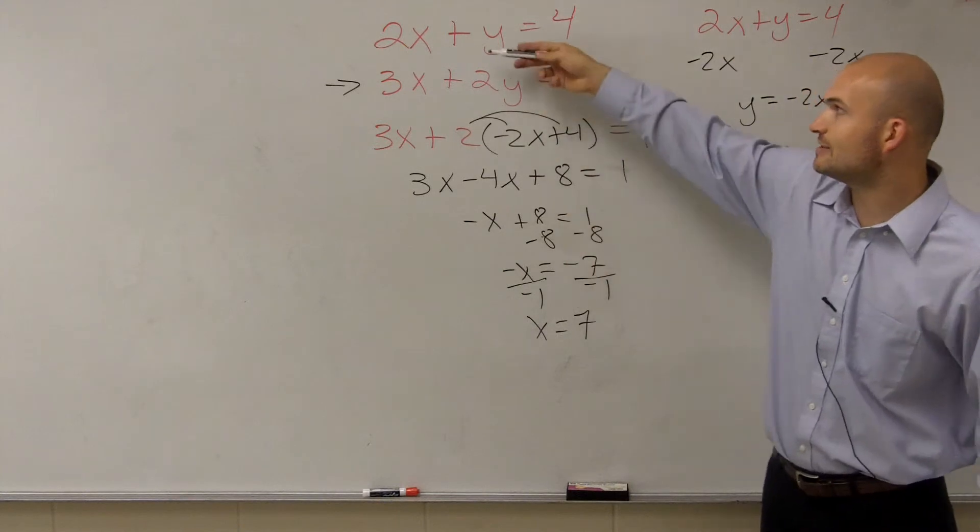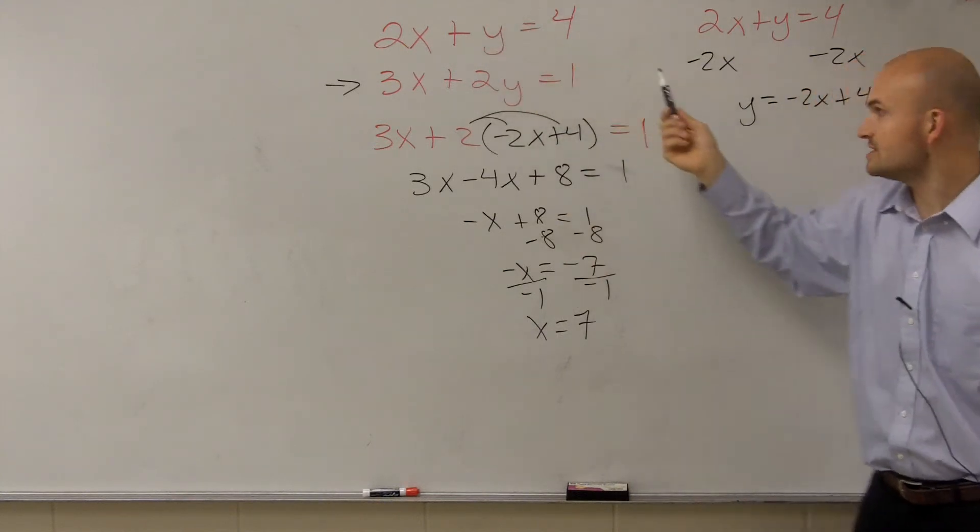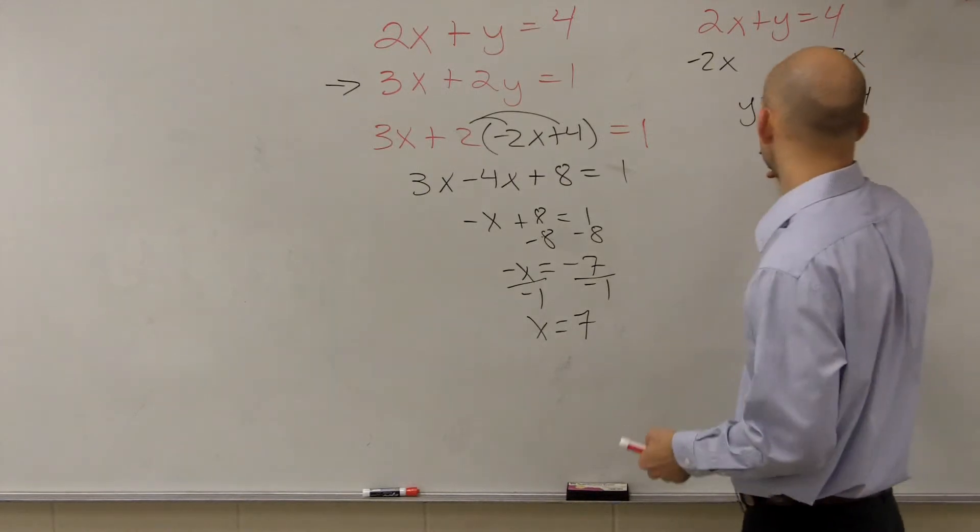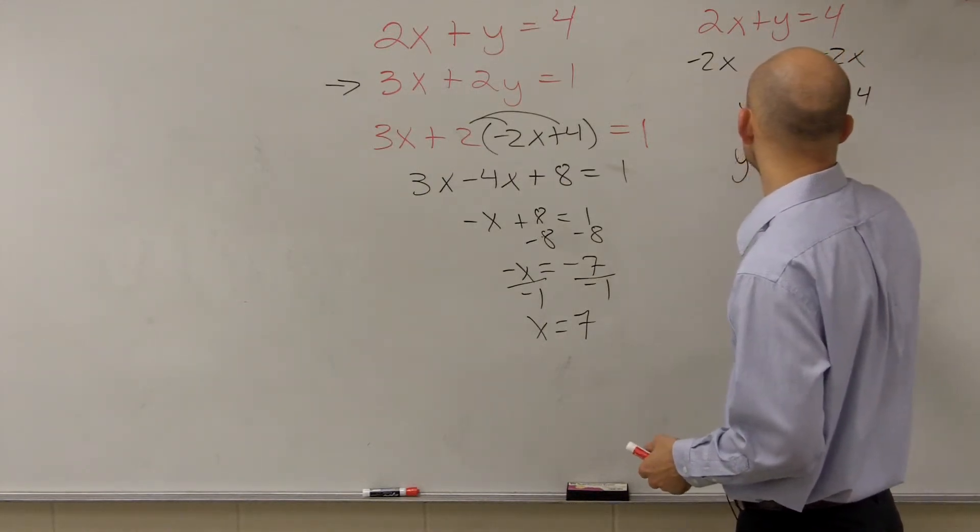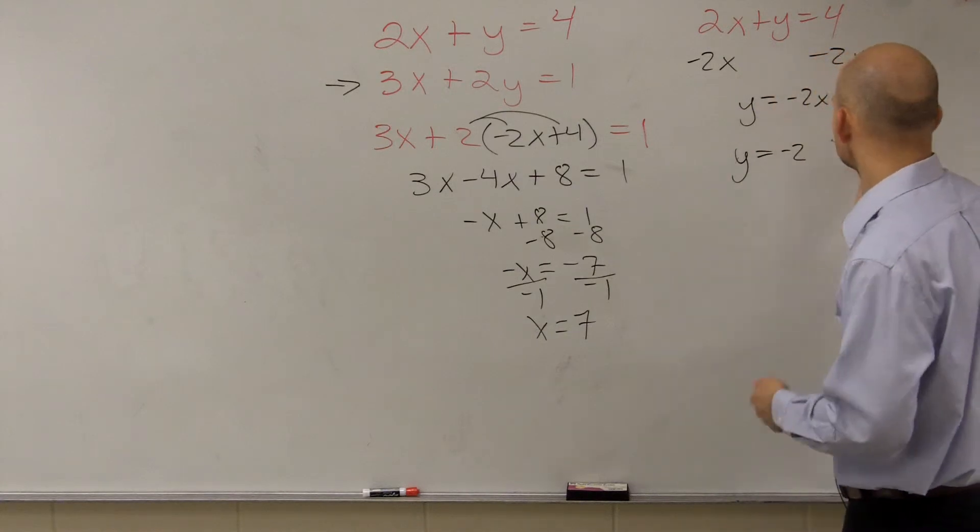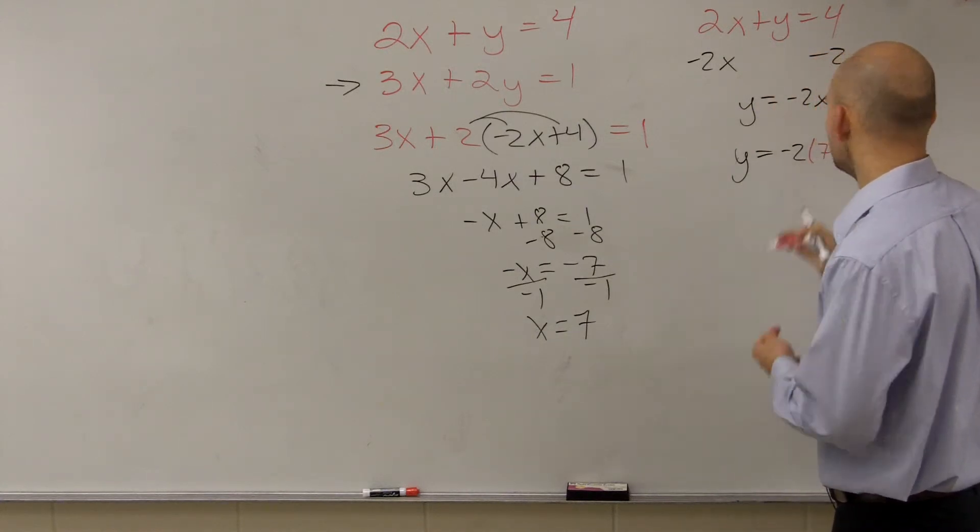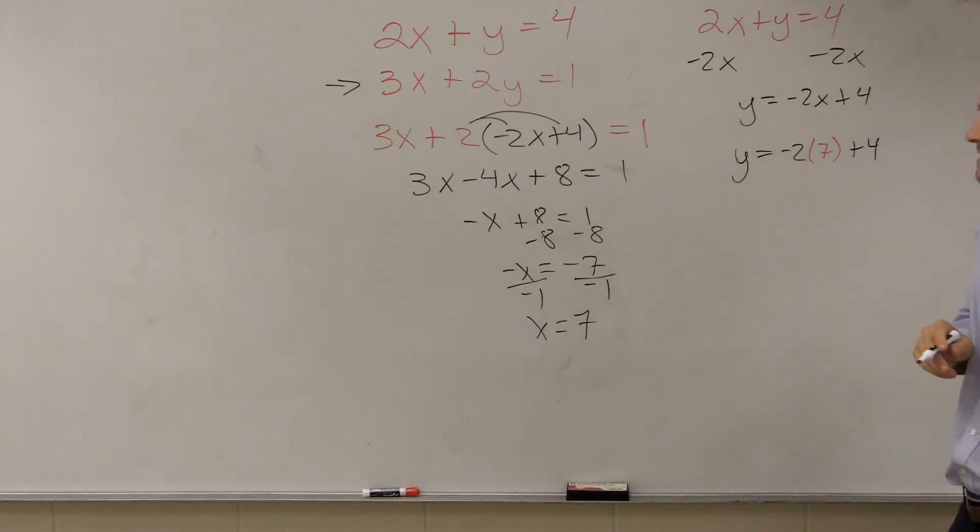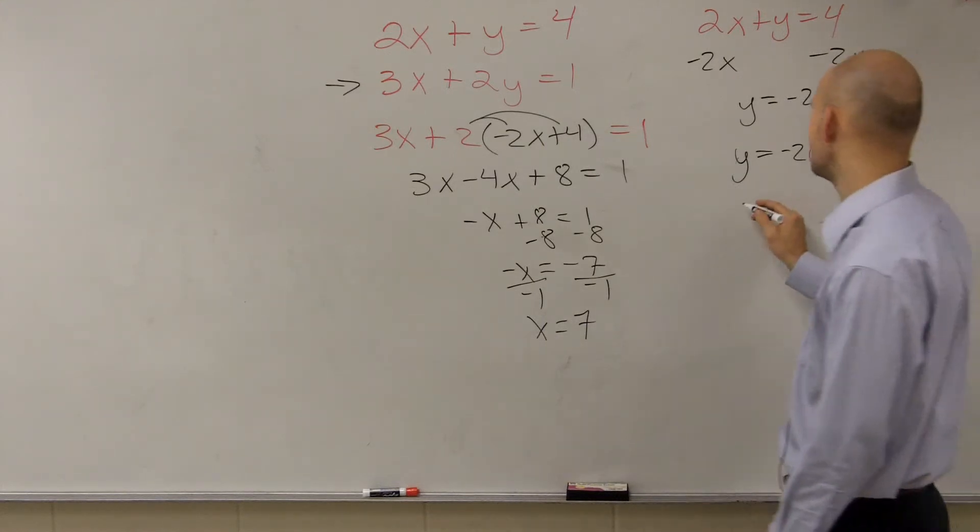You can plug 7 in for x into one of these two, but I already spent my time solving for y, and that's what I need to find the new value for. So I'm going to plug in y equals negative 2 times 7 plus 4. Negative 2 times 7 is negative 14. Negative 14 plus 4 is negative 10.